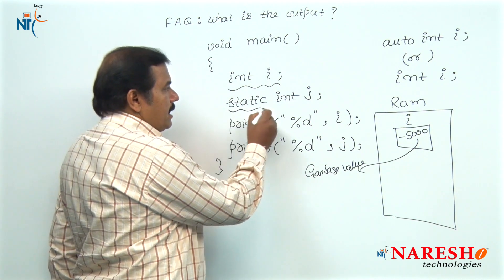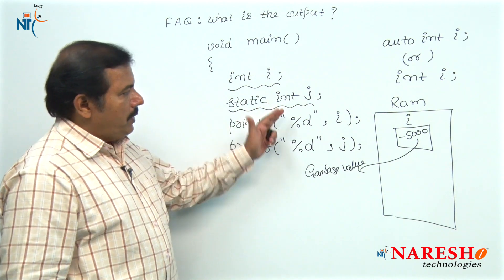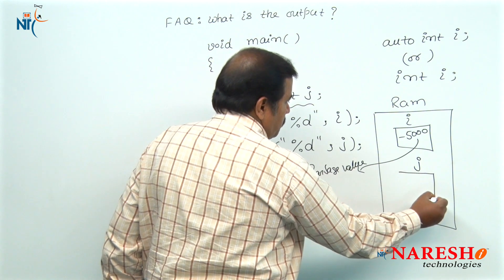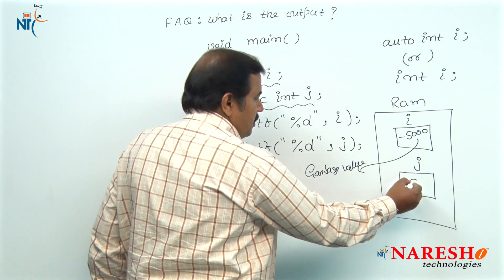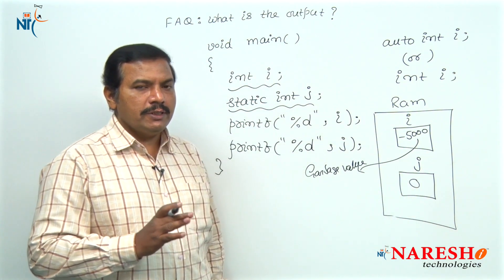Coming to the second type of variable, the static variable. When the statement executes for static variable j, 2 bytes of memory space is also allocated, but the default value stored inside this memory location is 0.